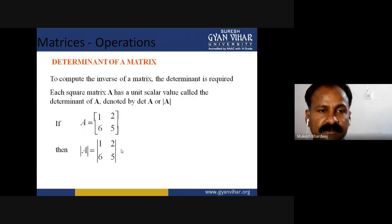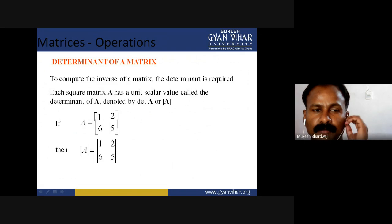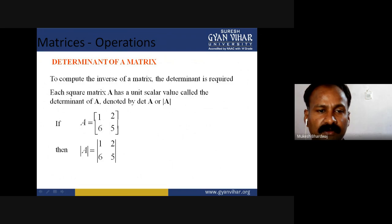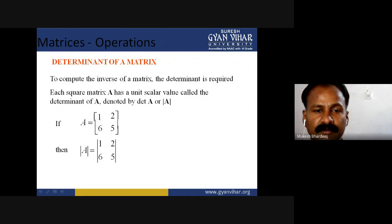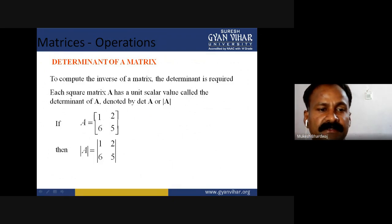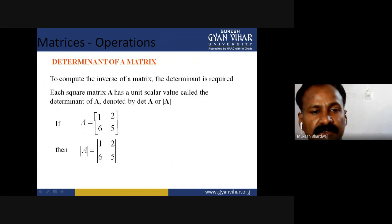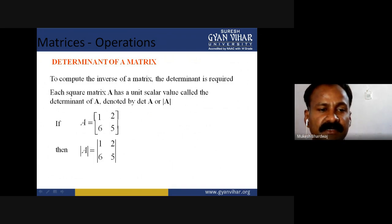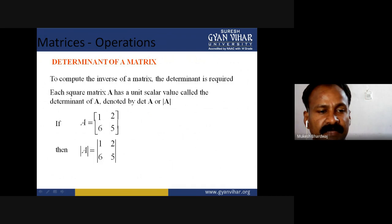Square matrices have an inverse except when the determinant is zero. When the determinant of the matrix is zero, the matrix is singular. Now, for the determinant of matrix: to compute the inverse of matrix, the determinant is required. Each square matrix has a unit scalar value called the determinant of A, denoted by determinant A or by symbolic representation as A enclosed by two parallel lines. The determinants are defined only for square matrix.